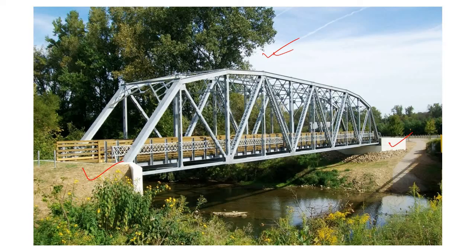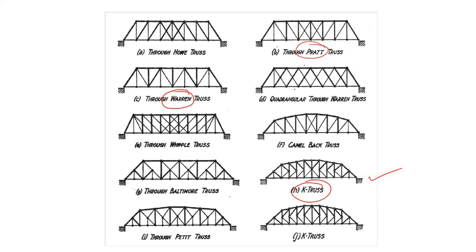Now look at this bridge. Here also, if we consider the smallest part, it is triangular in nature. The middle one is also triangular, and this one is also triangular. Every type of truss — whether Warren, Pratt, or K truss — will have a triangular shape when we consider the smallest unit.